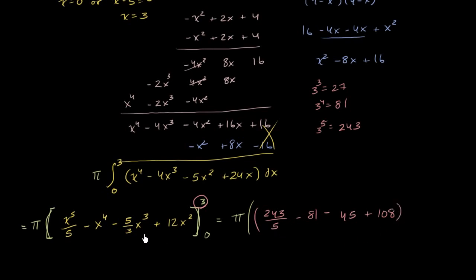And then we're going to subtract out this whole thing evaluated at 0. But lucky for us, that's pretty simple — everything evaluates to 0 at x equals 0. So we're going to subtract out 0, which simplifies things a good bit.